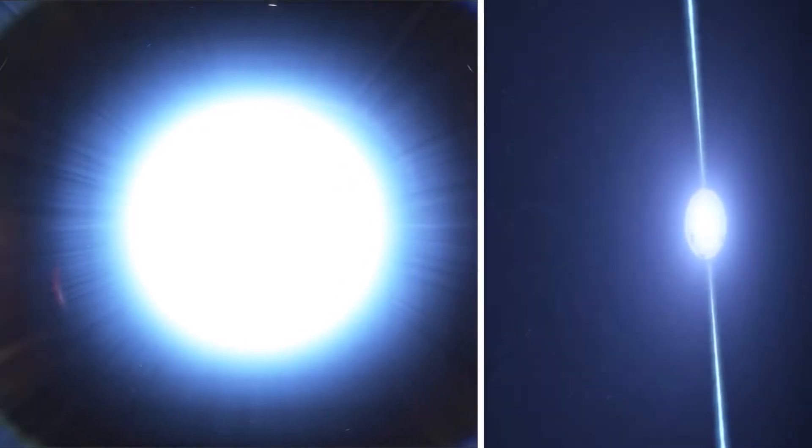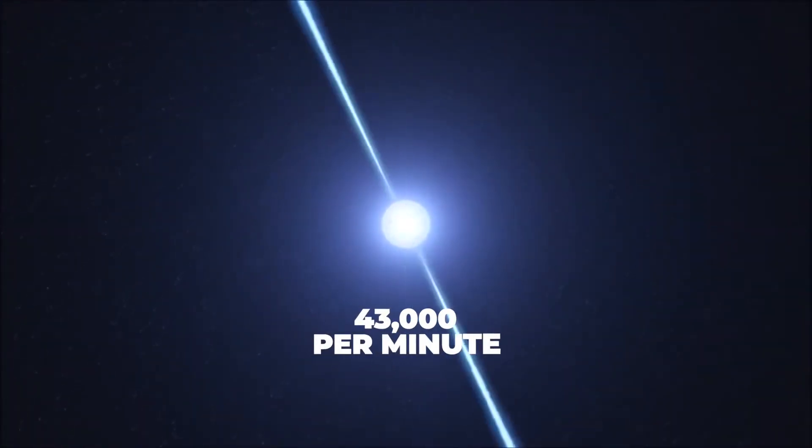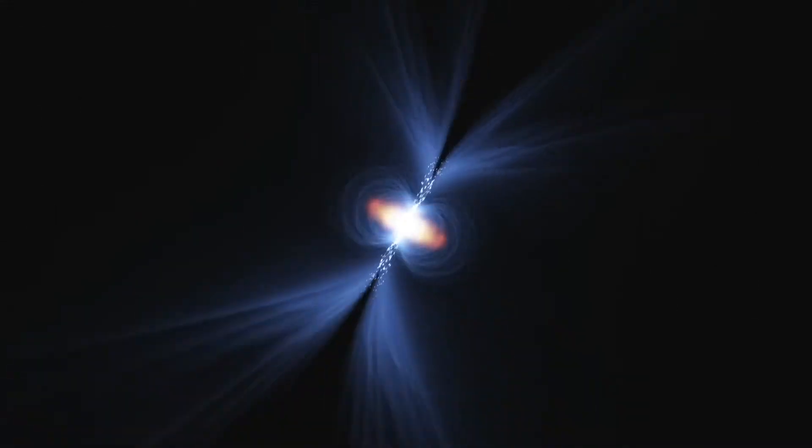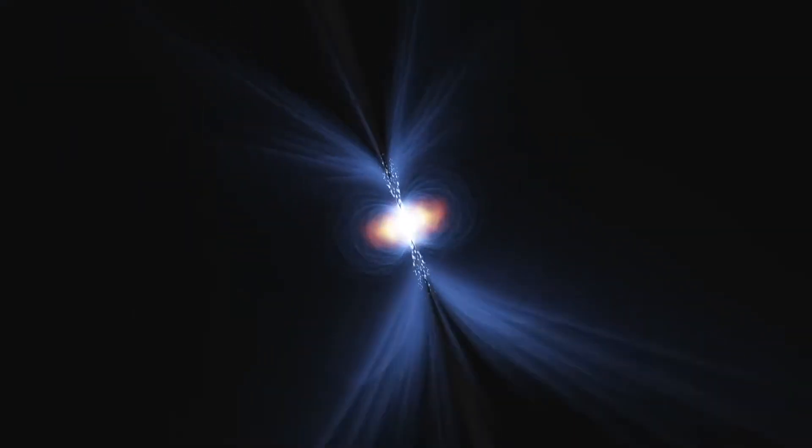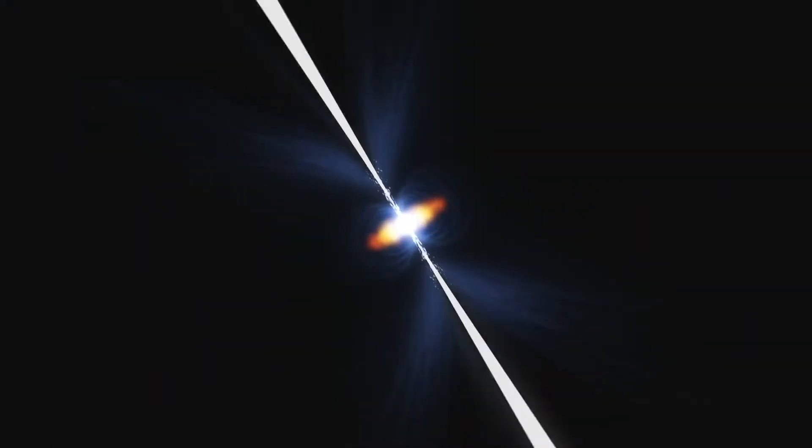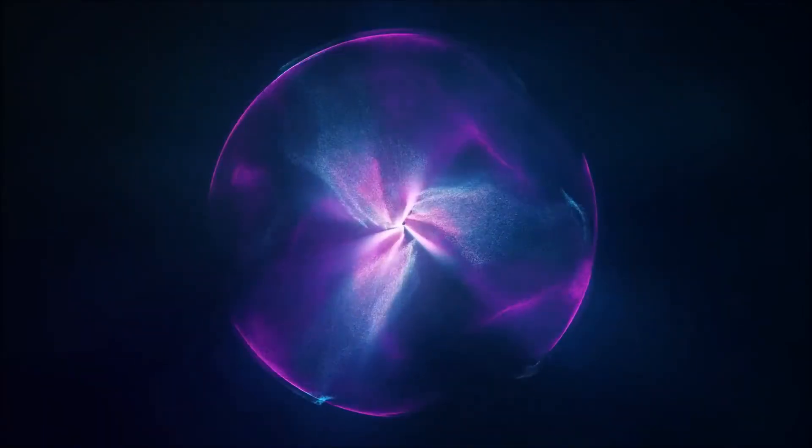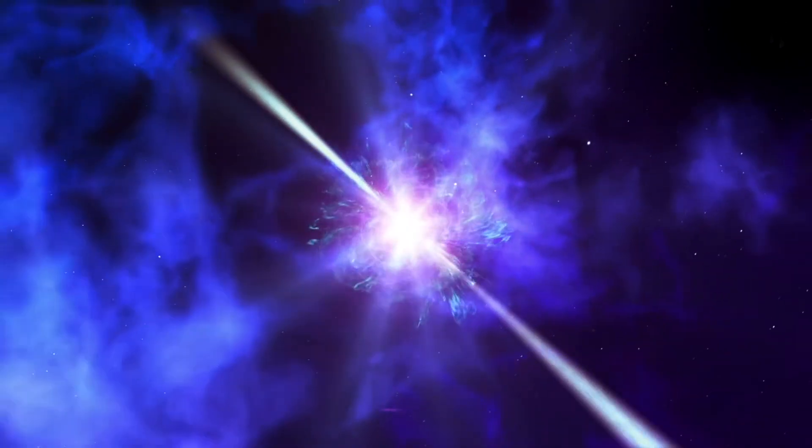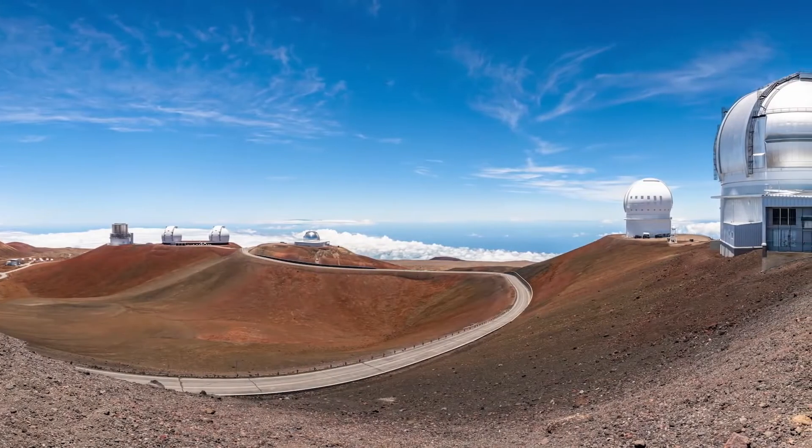For one, pulsars rotate extremely rapidly. They can sometimes spin up to 43,000 times every minute. This extreme rotation helps them generate a supercharged magnetic field that extends beyond their body into space. As the pulsar spins, its magnetic field pulses and emits powerful radio waves from its poles periodically. Detecting and locating these radio waves allow astronomers to spot these stellar objects.